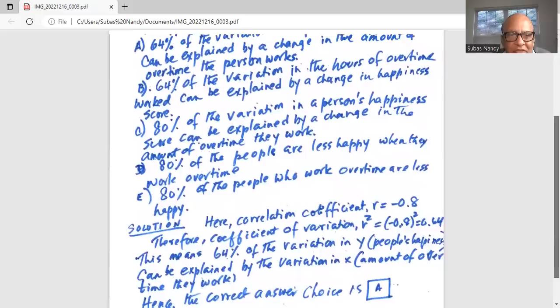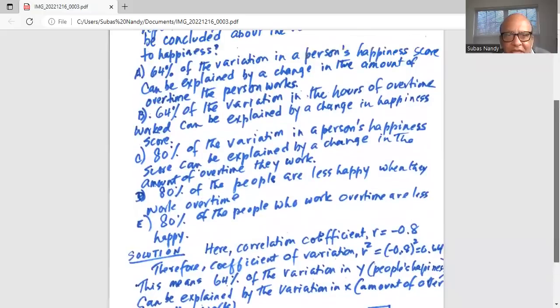Hence the correct answer choice is A, which is 64% of the variation in a person's happiness score can be explained by a change in the amount of overtime the person works.